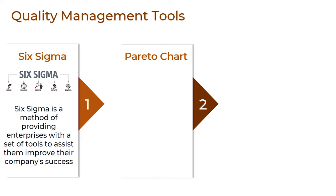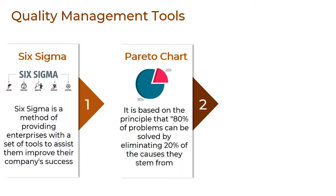Next, we have Pareto Chart. The Pareto Chart is an analysis tool. It is extremely helpful while making decisions based on priorities. It is based on the principle that 80% of problems can be solved by eliminating 20% of the causes they stem from. This means that with a few corrective actions, a large number of deficiencies can be resolved easily. This chart is similar to a bar chart and is commonly used to identify the key factor or factors in a problem, to determine the main cause of a problem, to build a method to improve the elements, and to ascertain whether the desired effect has been achieved or not.